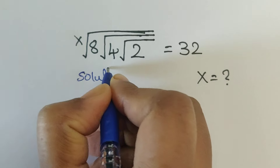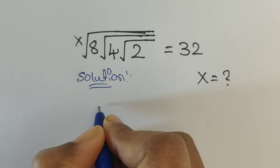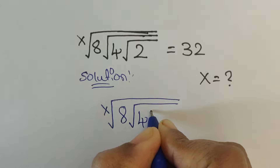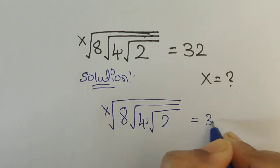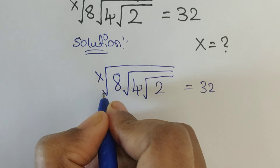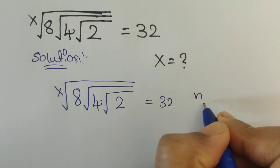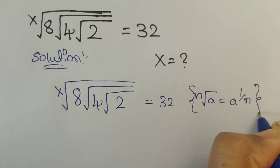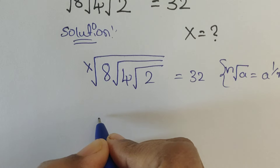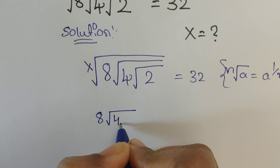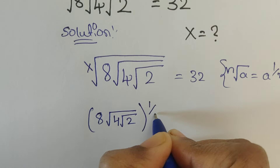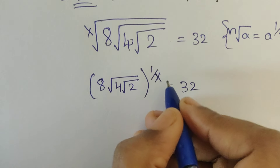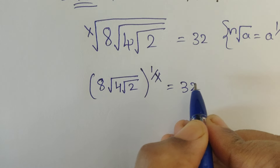Solution. The question is x to the root of 8 square root of 4 square root of 2 equals 32. We can apply the formula: nth root of a equals a to the power of 1 by n. Using this formula, we write: 8 square root of 4 square root of 2, whole to the power of 1 by x, equals 32. Now multiply by x on both sides as a power.